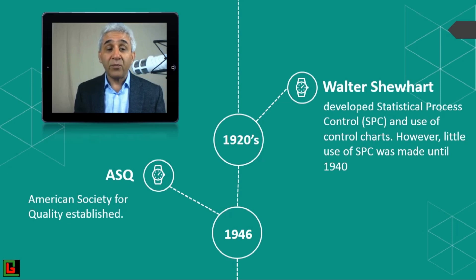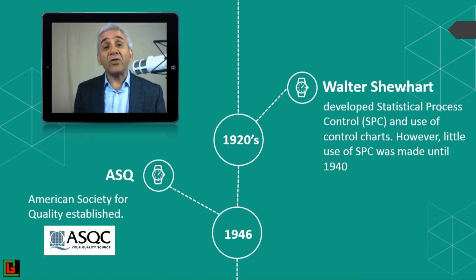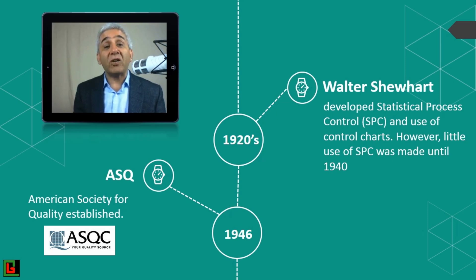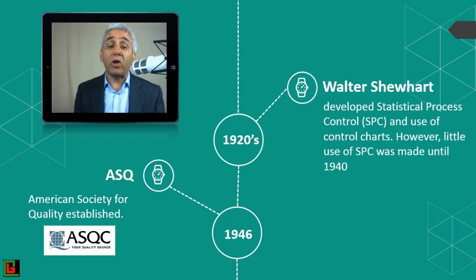So the fundamentals of Six Sigma go well back to the 1920s when Walter Shewhart introduced SPC and control charts. In 1946, the American Society for Quality was established — at that time it was called ASQC, the American Society for Quality Control, which was later changed to ASQ.